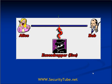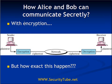If Alice wants to talk with Bob over a publicly shared media so that no one in between should be able to tamper those messages or read those messages, how exactly should Alice and Bob communicate with each other? The simple answer is with the help of encryption.